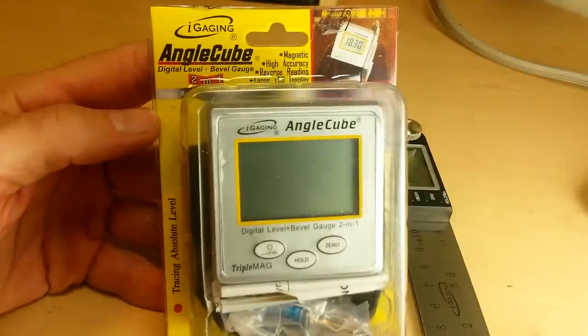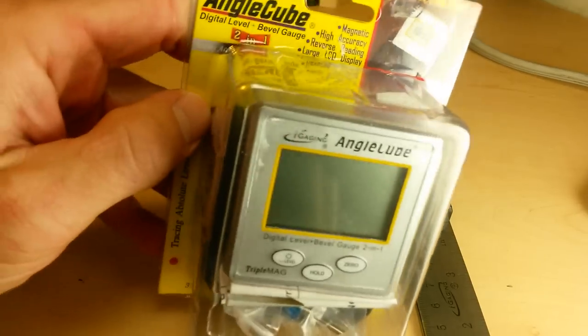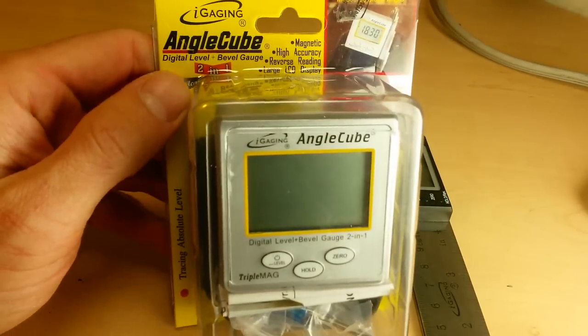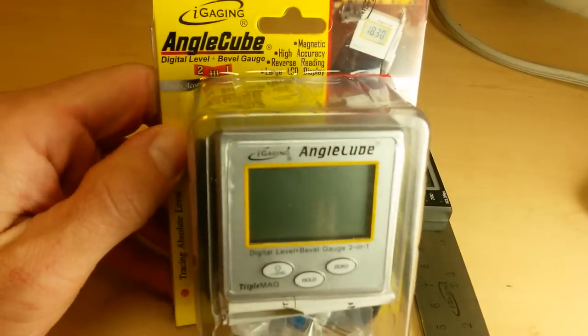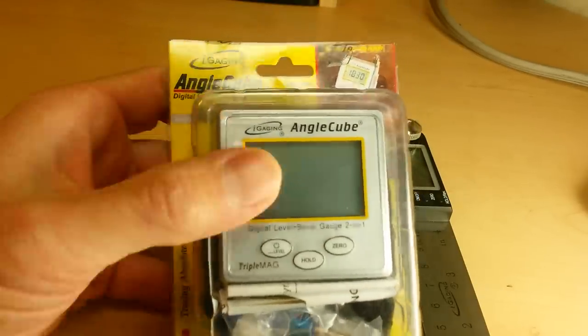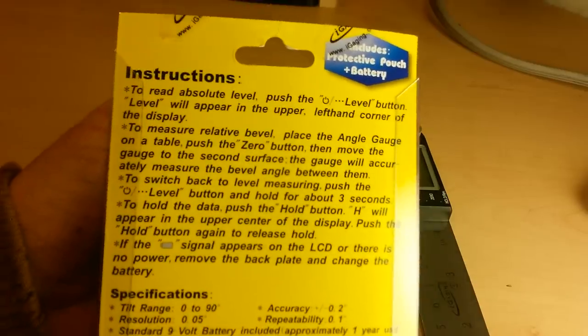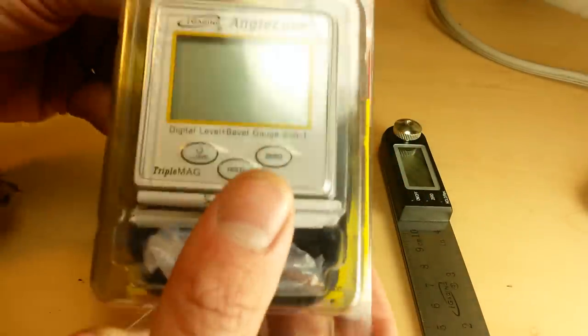Hey, hey, it's gadget class time. Today we're looking at the iGaging Angle Cube. This is actually a fully standalone digital level as well as a bevel gauge. It can allow you to measure two angles in reference to another or measure true level. Pretty great device all around. iGaging kind of brought this product to the market, they're the market leader on this product and they do it right.